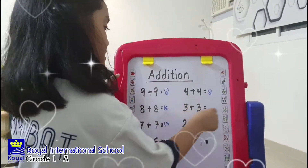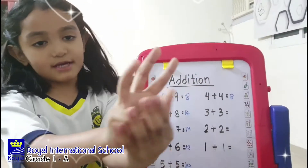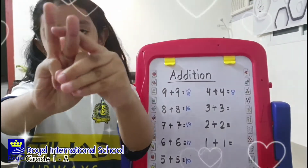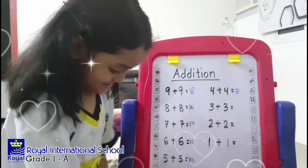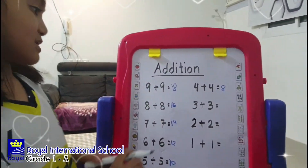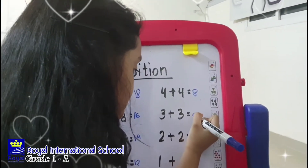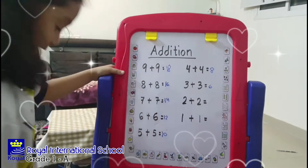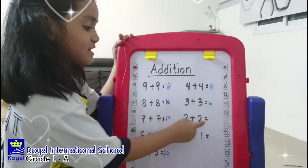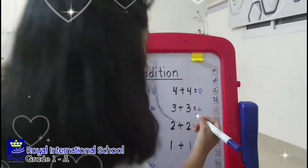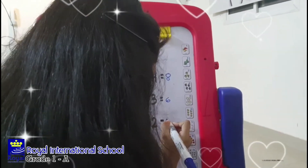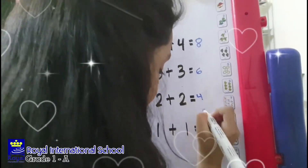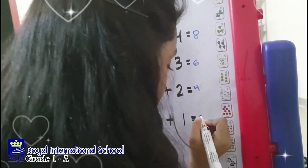3 plus 3. I have 3 in my hand and 3 in my mind. After 3: 4, 5, 6. Equals 6. 2 plus 2 equals 4. 1 plus 1 equals 2.